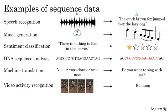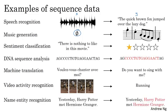In video activity recognition, you might be given a sequence of video frames and asked to recognize the activity. And in named entity recognition, you might be given a sentence and asked to identify the people in that sentence.